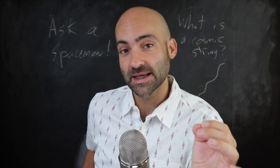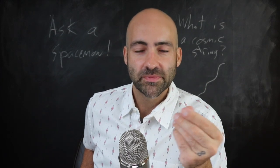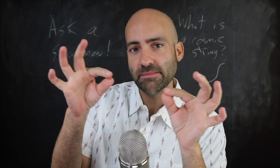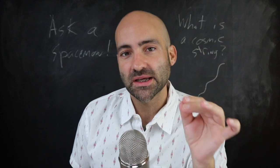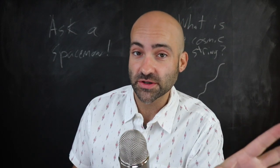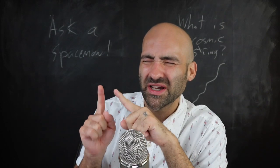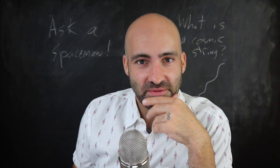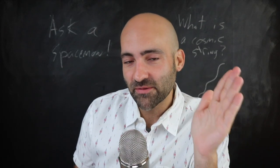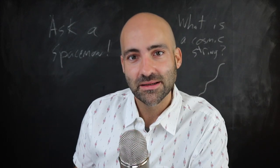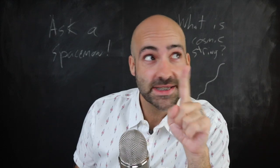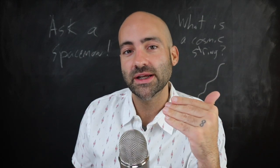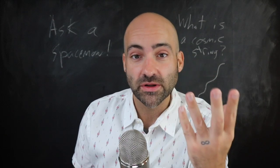These are defects in spacetime itself — wrinkles. They can have different dimensions and different shapes. One of the most common ones predicted is a one-dimensional defect in spacetime called a cosmic string. This is different from the string in string theory — those are called superstrings, though there might be a way in string theory to connect them. Today we're talking about cosmological defects: cosmic strings. They may have been formed in the early universe and they may persist to the present day. Somewhere out there, the universe today might contain a defect in spacetime generated in one of the most violent episodes in the earliest history of our cosmos.